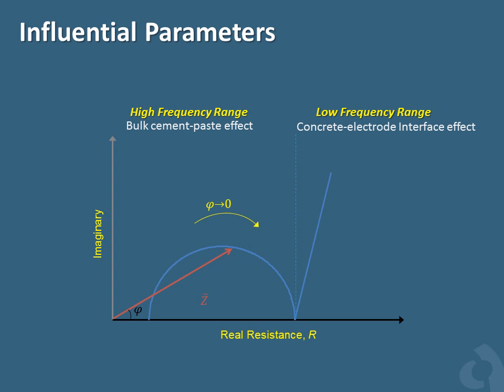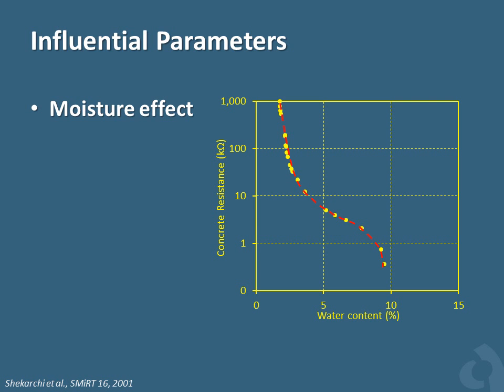Most electrical resistivity test methods employ alternating current. If we test the resistivity of concrete using AC current, the response may vary depending on the frequency range used. When testing at low frequency, the concrete-electrode interface becomes important. The effect of concrete bulk is well determined using a higher frequency range. It is also worth mentioning that increasing the moisture content of concrete will result in a decrease in electrical resistivity. This is an interesting relationship because one can track changes in moisture content of concrete by measuring its electrical resistivity.